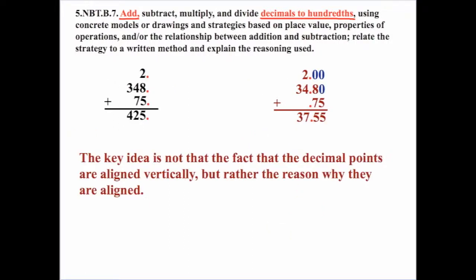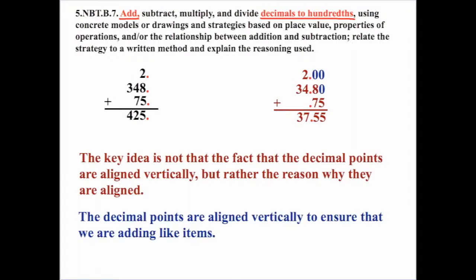The key idea isn't just that the decimal points are aligned vertically — it's the reason why they're aligned. The decimal points are aligned to make sure we're adding like items: ones with ones, tens with tens, hundreds with hundreds. In the case of decimals, the same exact idea applies — make sure we're adding hundredths with hundredths, tenths with tenths, ones with ones, and tens with tens. It's why we're doing it: to make sure we're adding like items.